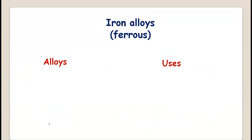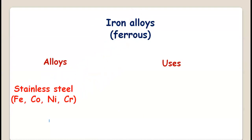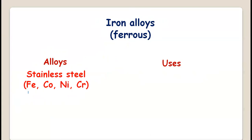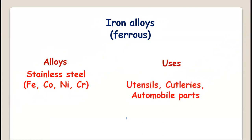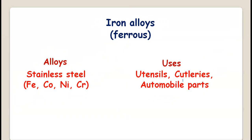Now we have iron alloys — ferrous alloys — where iron acts as a major component. Number one is stainless steel. It is an alloy of iron, cobalt, nickel, and chromium. Its uses include utensils, cutleries, and automobile parts.